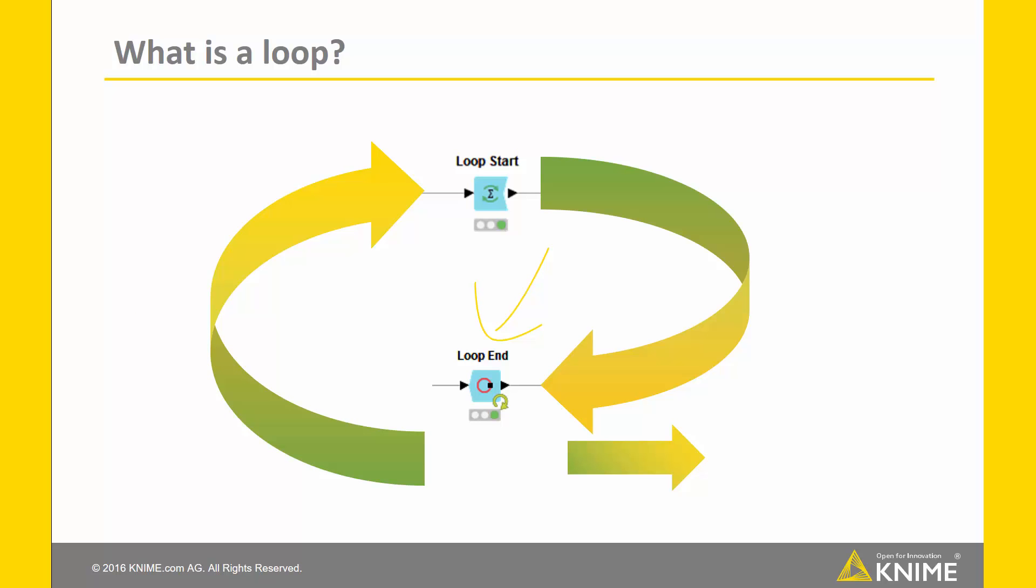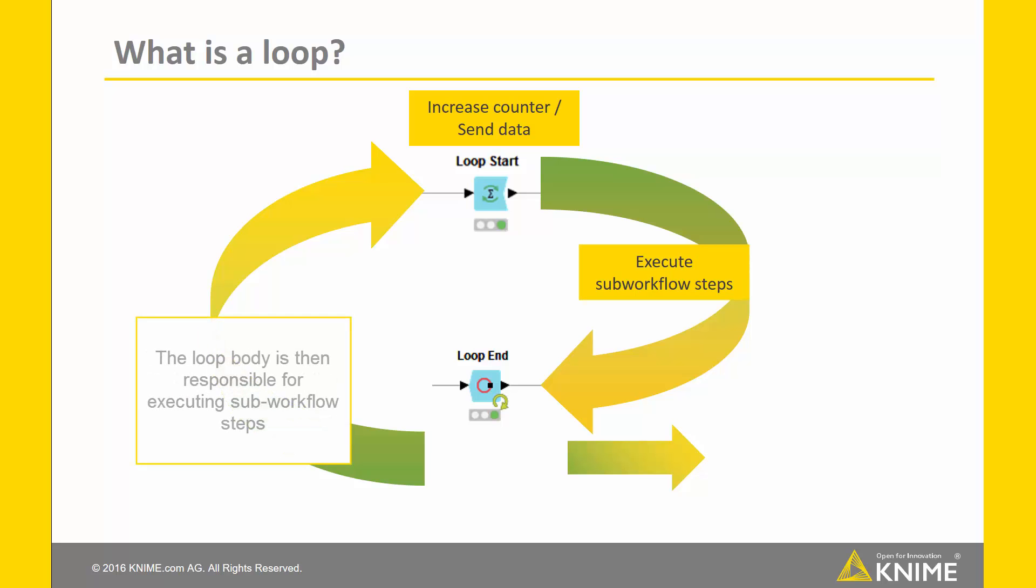Let's go through this progress step by step. The first node is the loop start node. It's responsible for increasing your counter in which iteration you are currently in and for sending out the data to the loop body.